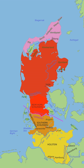The largest cities in the Danish section of Jutland are as follows: Aarhus, Aalborg, Esbjerg, Randers, Kolding, Horsens, Vejle, Herning, and Silkeborg.